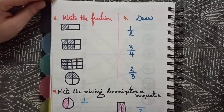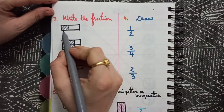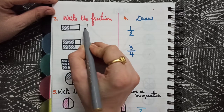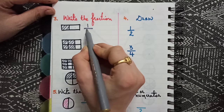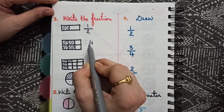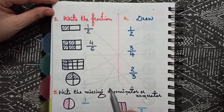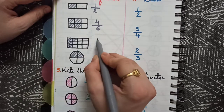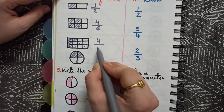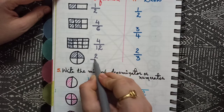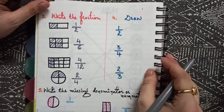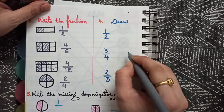Another activity: write the fraction. Let them count how many colored parts — one — by how many total parts — two — so this is one by two. Again, one, two, three, four colored by six total, so four by six. Then one, two, three, four, five, six, seven, eight, nine, ten, eleven, twelve total with four colored — four by twelve. And two by four.